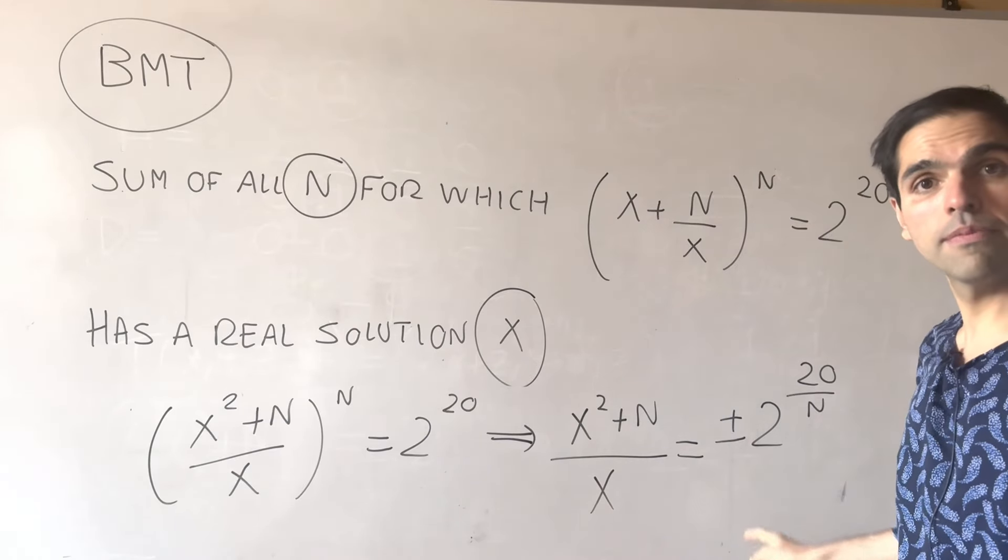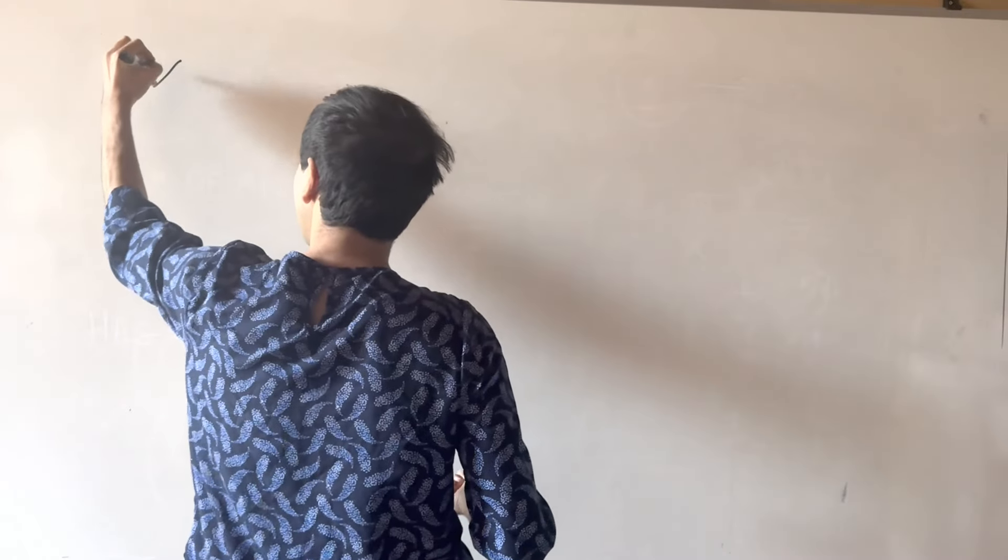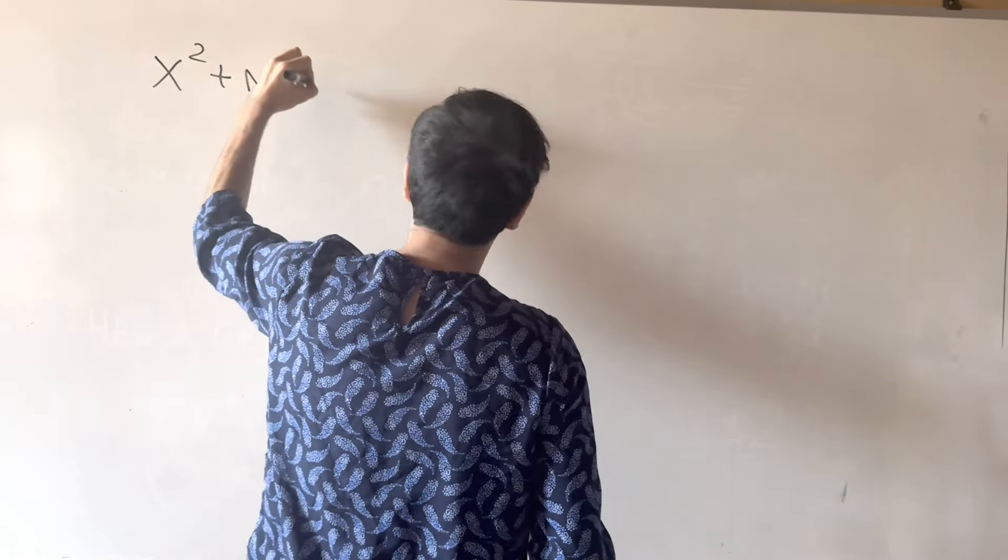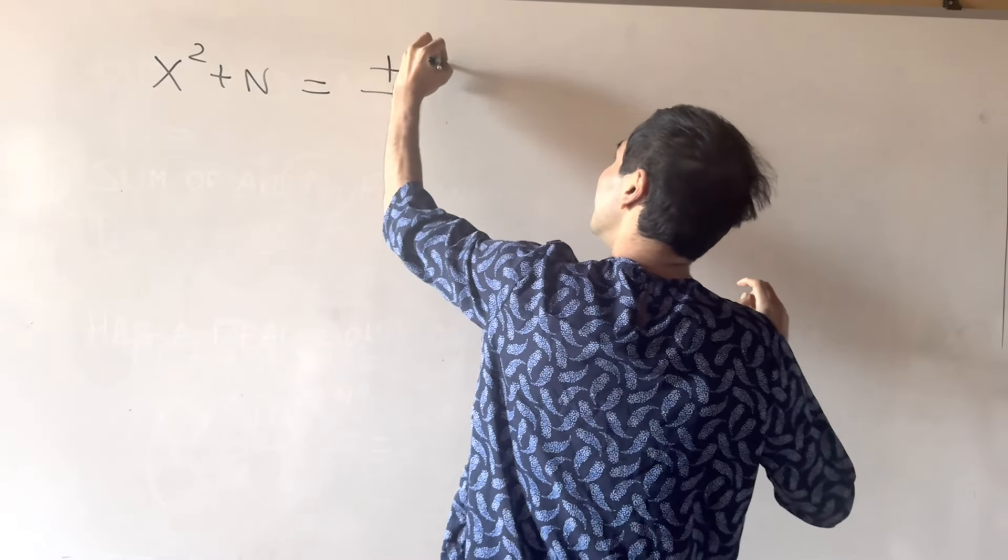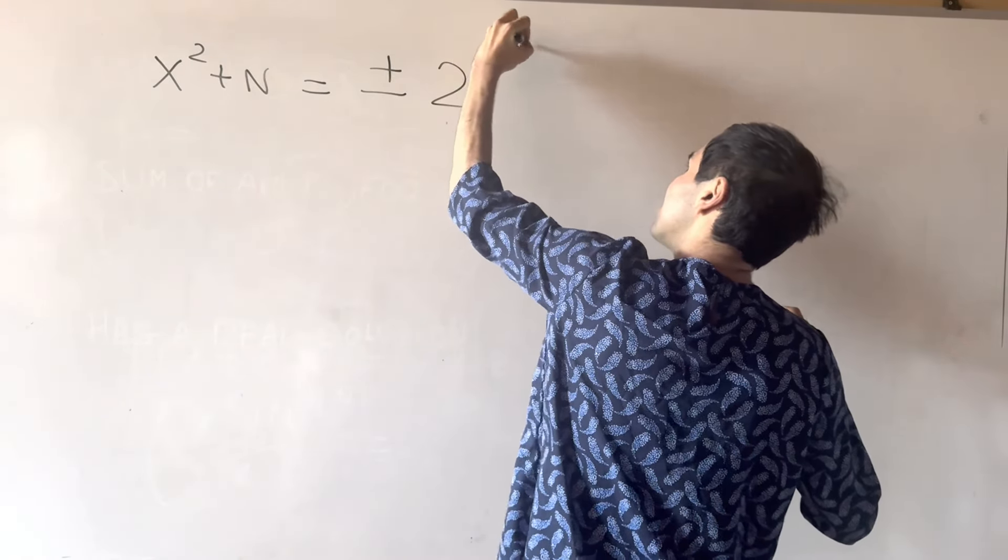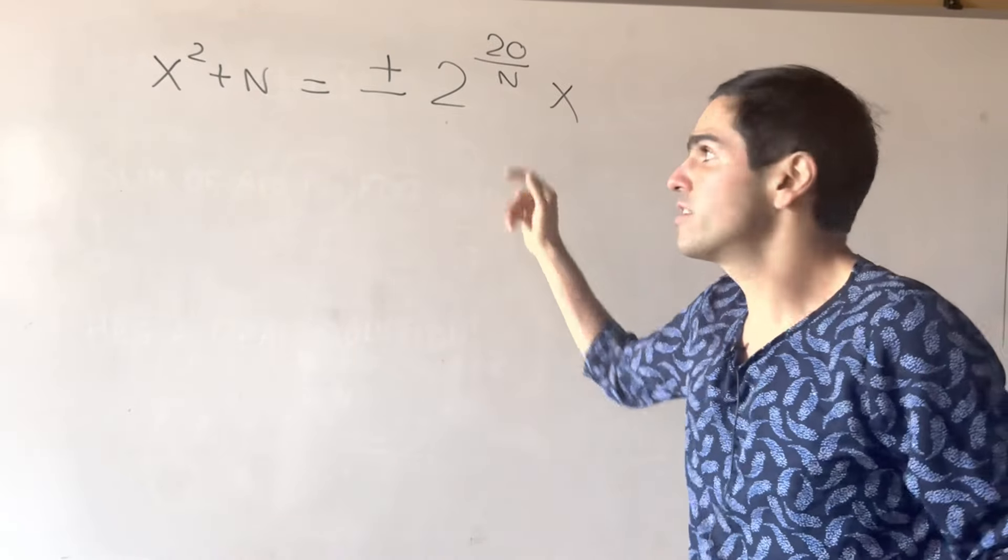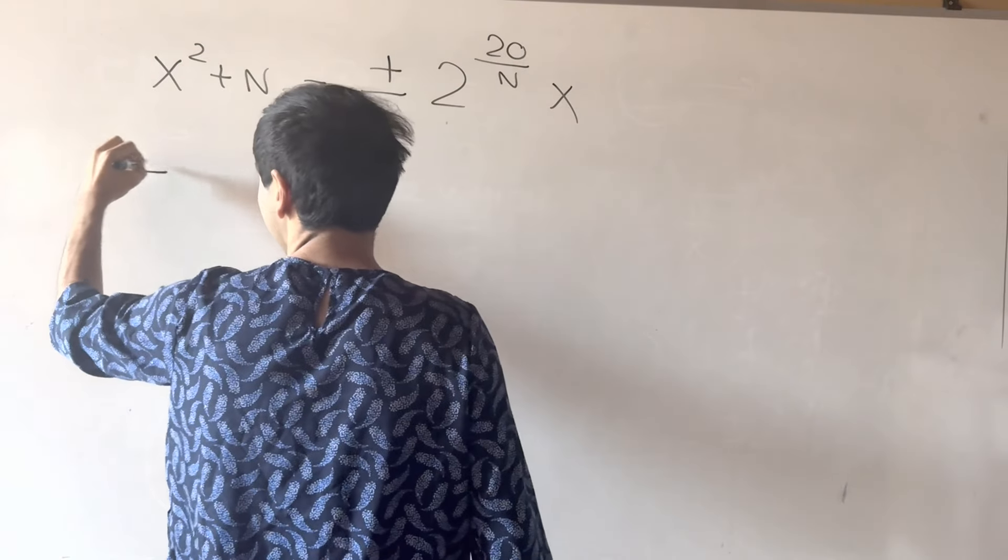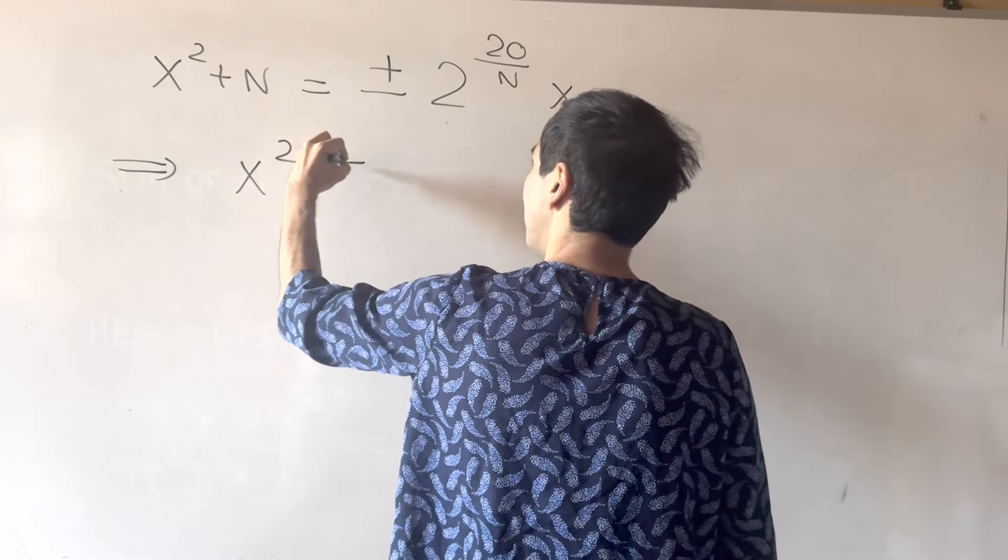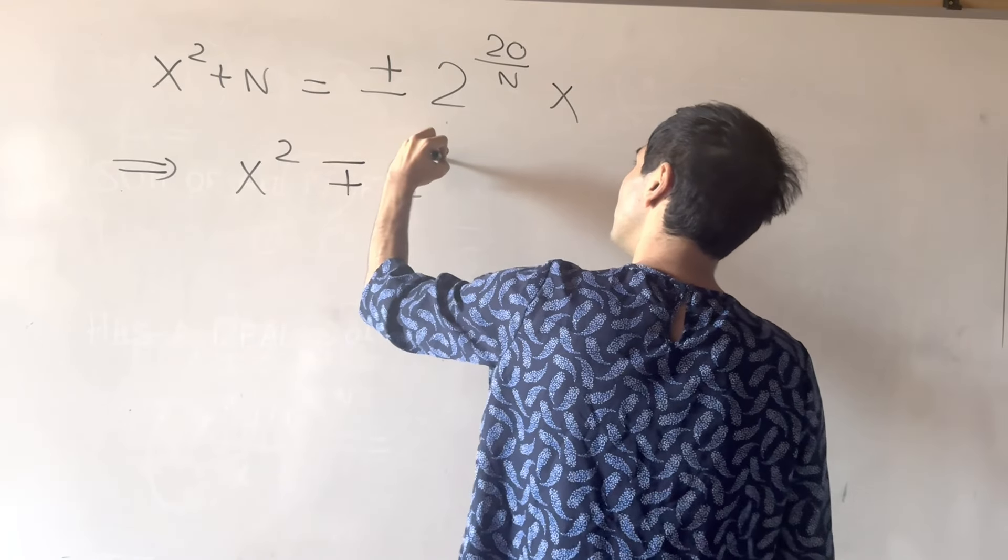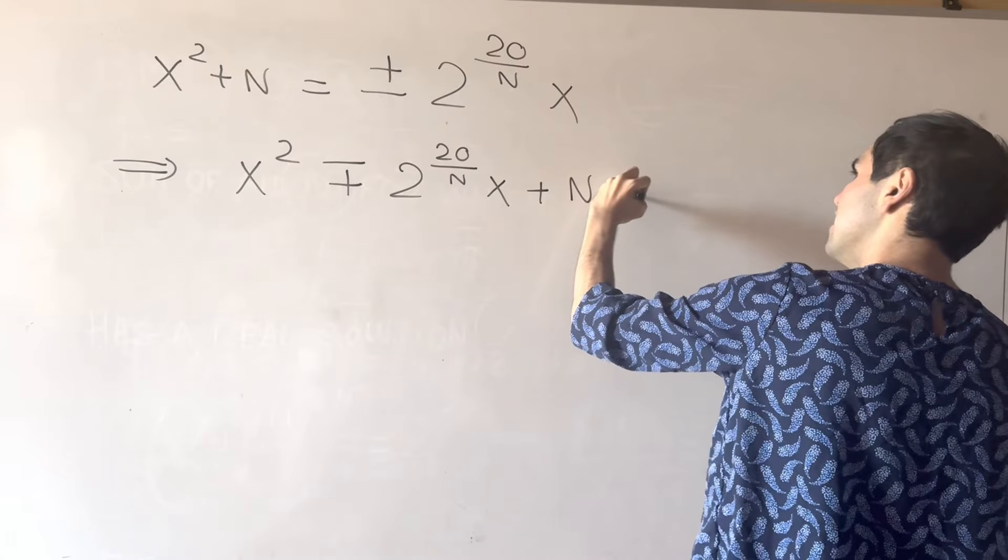And then what you can do, you can multiply by x to then get the following: x^2 + n equals plus or minus 2^(20/n) times x, and then what we get is a quadratic equation, x^2 minus plus 2^(20/n)x plus n equals 0.